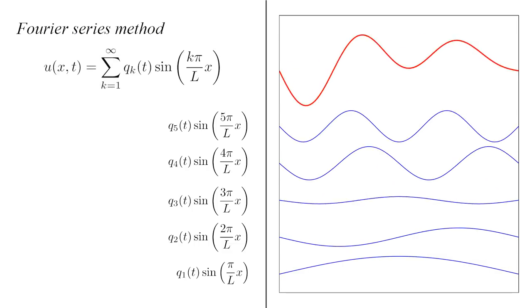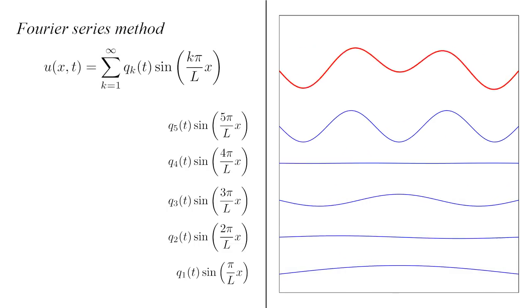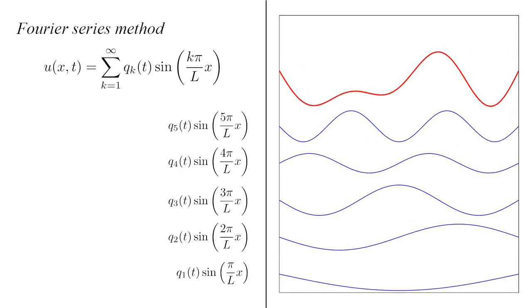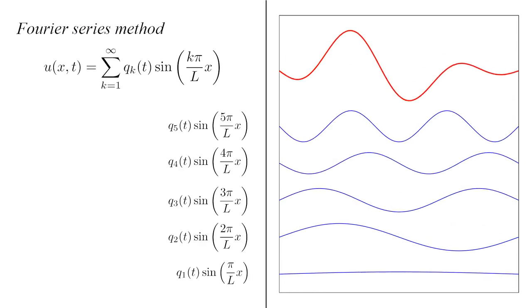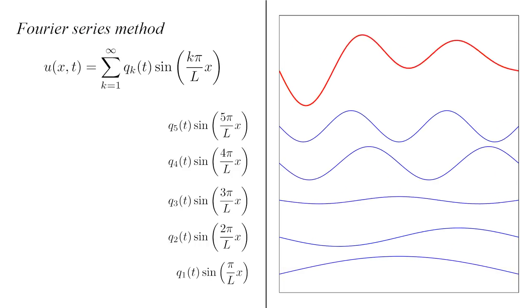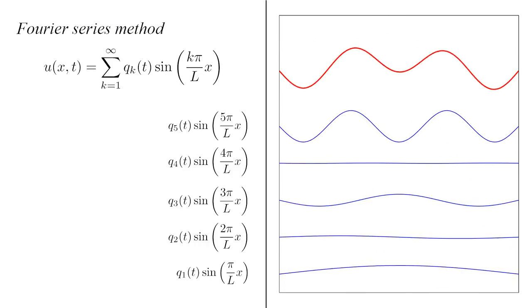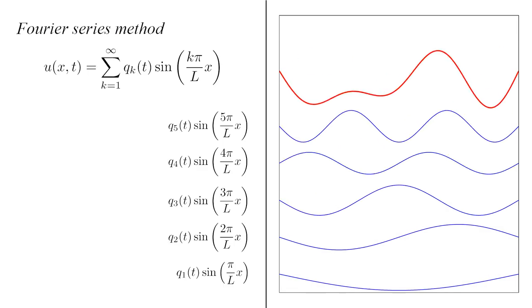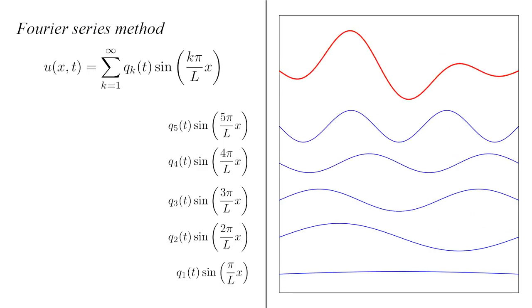If you sum all the modes, you get a complicated, non-sinusoidal oscillation of the string. In fact, any physically possible string oscillation can be represented by a superposition of these simple modes with suitably chosen amplitudes q_k.